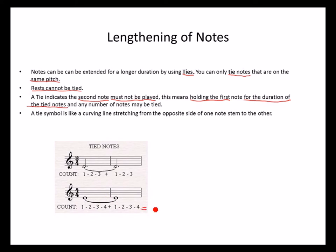Therefore you count one, two, three, four, plus the second note one, two, three, four, giving you a value of eight beats. Remember, you hold the first note for the entire duration of the tied notes.